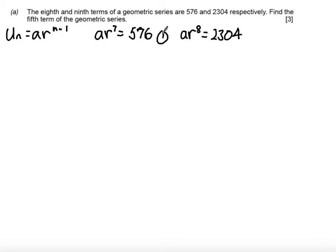Now if I label these equations 1 and 2, what I can do is divide the 9th term by the 8th term. You can divide any term by its previous term and that will leave you with the common ratio. We get ar to the power of 8 over ar to the power of 7 is 2304 divided by 576. That leaves us with r is equal to 4.